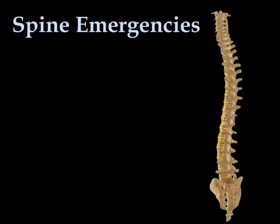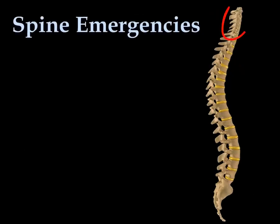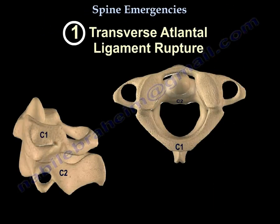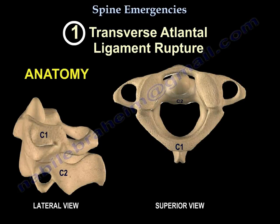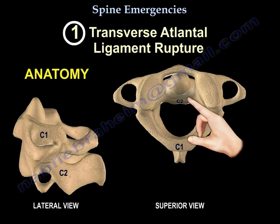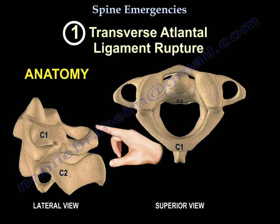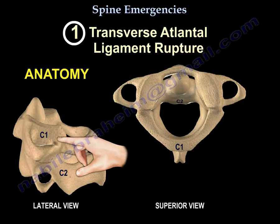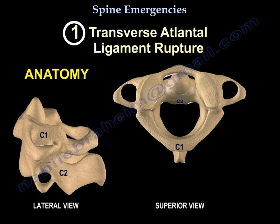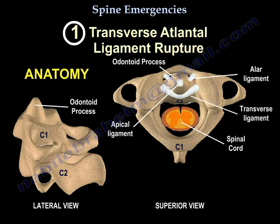Spine emergencies. We start with the transverse atlanta ligament rupture. On the right, you can see a top view of C1 and C2 vertebrae, and on the left side, you can see a lateral view of C1 and C2 vertebrae. You can also see the odontoid process, the transverse ligament, and the spinal cord.